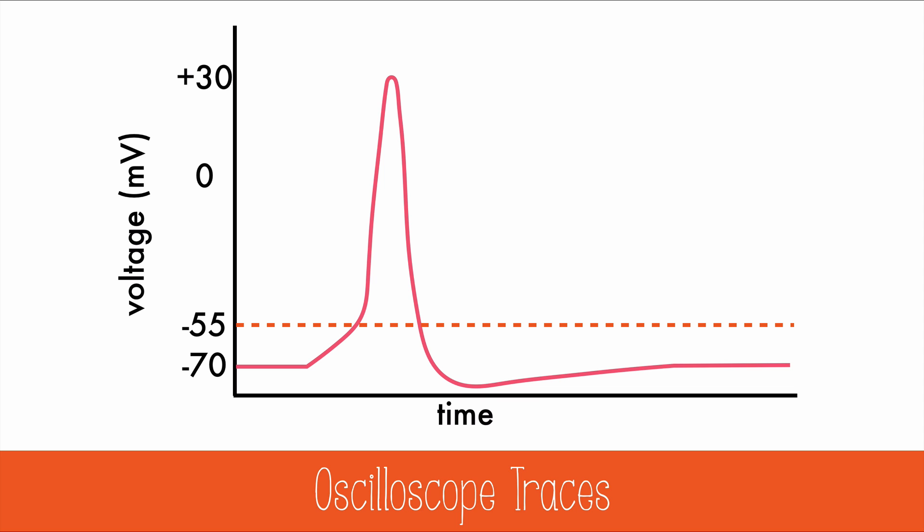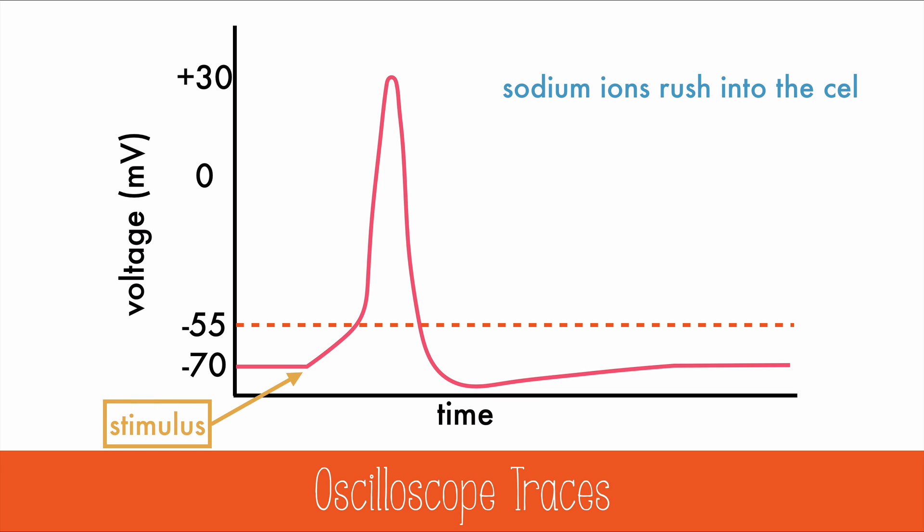In the oscilloscope trace of an action potential, we can see where the sodium and potassium gates have opened. Here is the point where the stimulus occurs and sodium gates open, allowing sodium to rush into the cell. This depolarizes the cell, causing the inside to become positive relative to the outside of the cell.